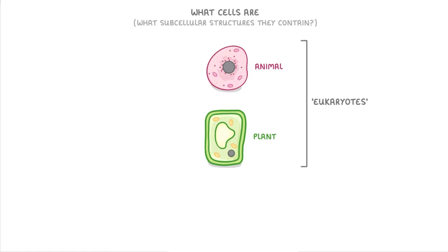Specifically though, we're going to look at the similarities and differences between animal and plant cells first, which are both examples of eukaryotic cells, and then also bacterial cells, which are prokaryotic cells.